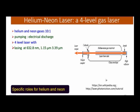Now we talk about the helium-neon laser, which is very popular, very old, very convenient, and cheap. Continuous wave oscillation is possible. This is a four-level gas laser consisting of a gas tube with helium and neon. Why helium and why neon is an important question — we will see that.